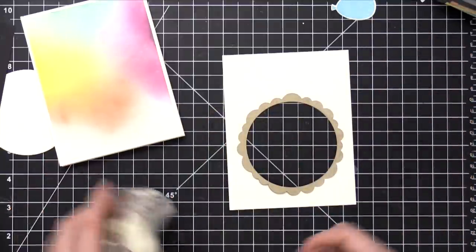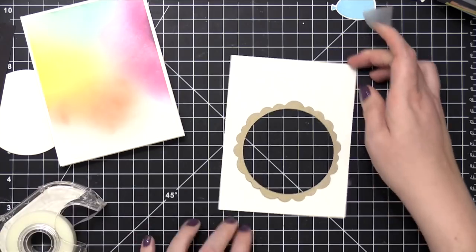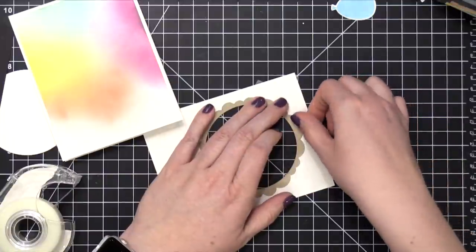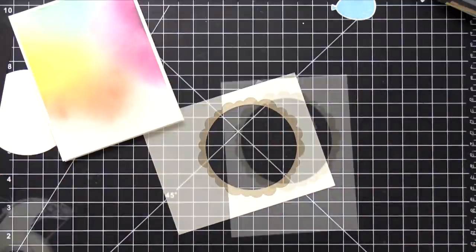So now I'm just using some regular Scotch tape just to hold this frame in place. This is the back of that cardstock. And I'm going to build my shaker area on top of this.